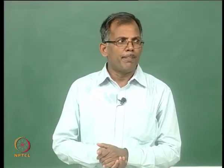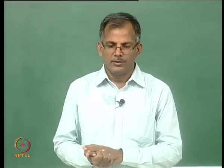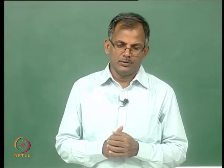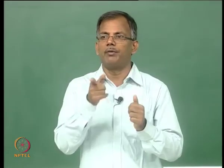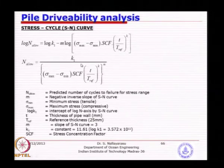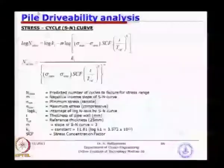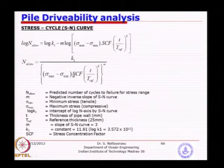We need to find out the stress concentration factor for that particular connection. It depends on the thickness change and the welding detail — whether you are welding from both sides or only from inside. All those things influence the stress concentration factor. If you rewrite the SN equation in terms of N allowable by taking the anti-log of both sides, you can express it in a format that is very easy to calculate N allowables.